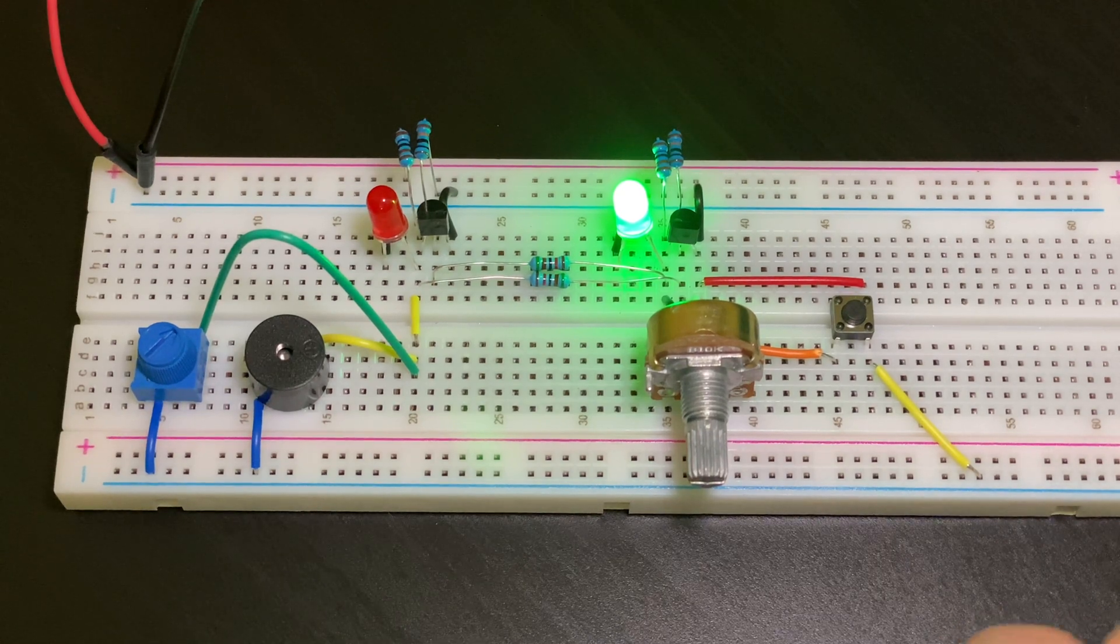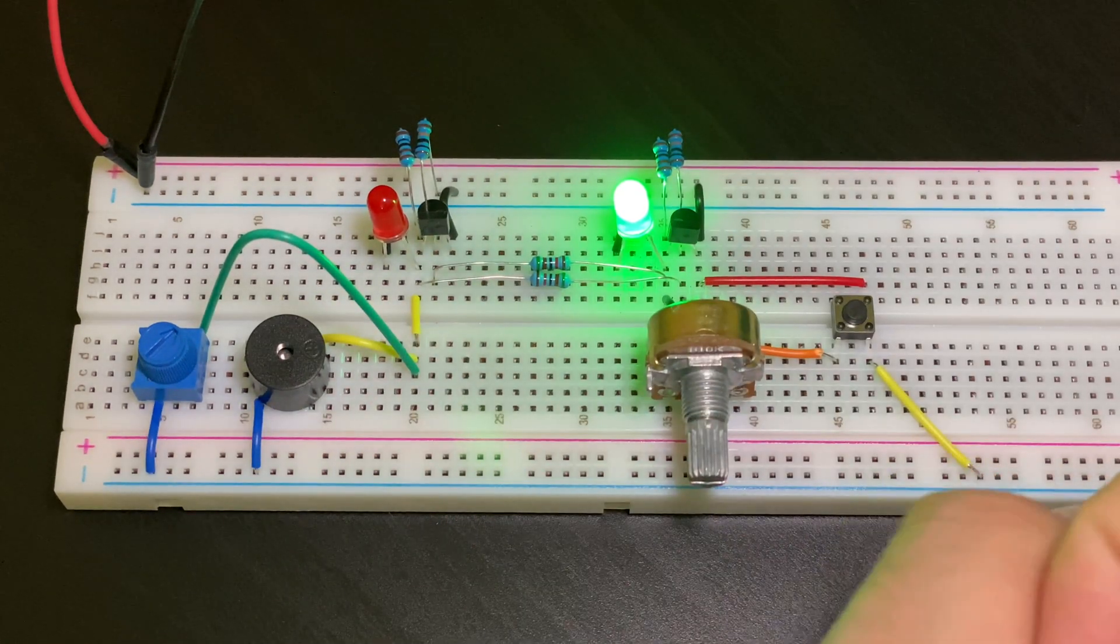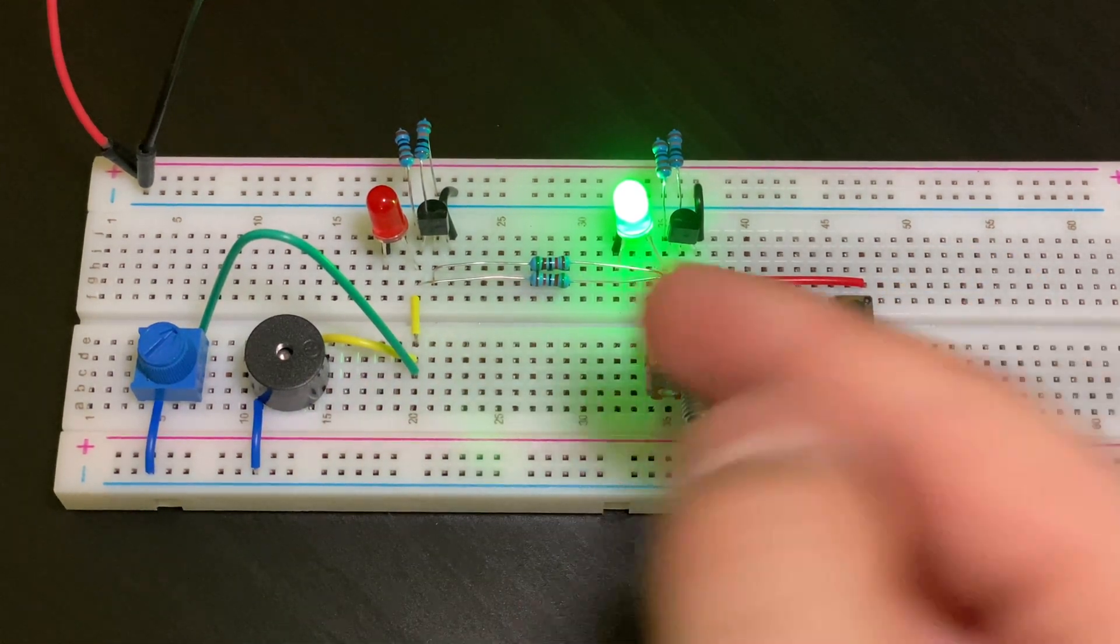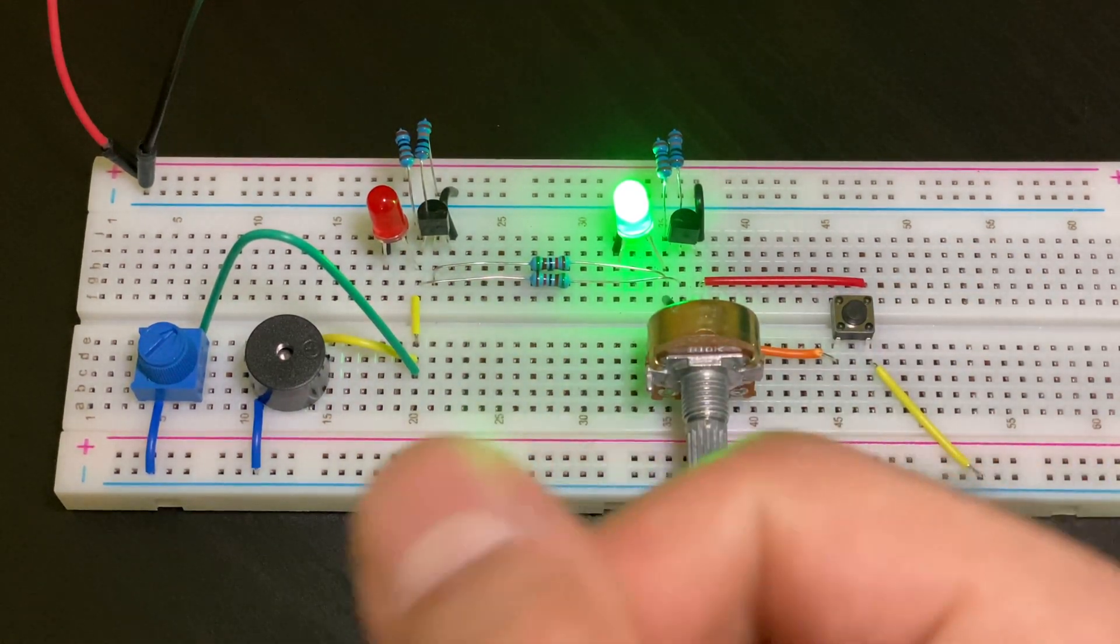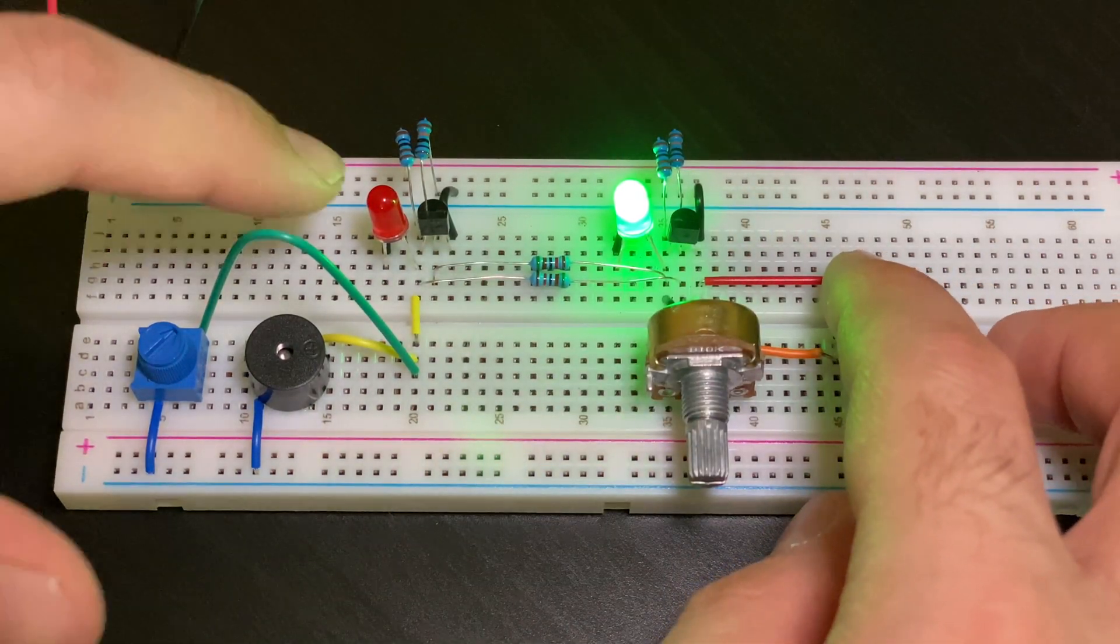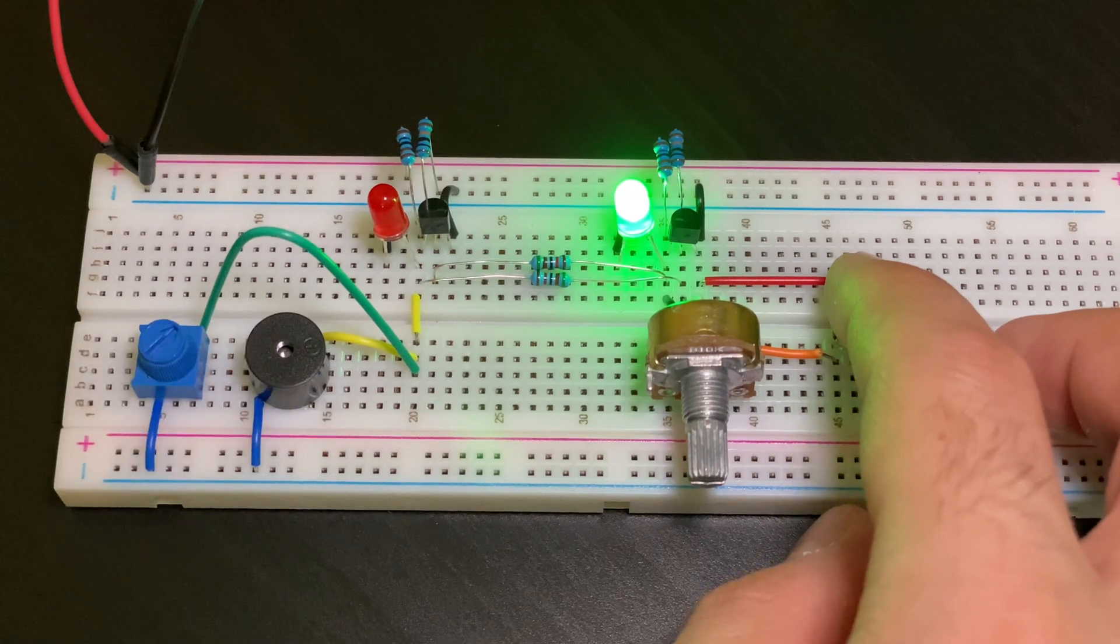My favorite part, the functionality. Here's the things that this circuit can do. You can currently see that the green LED is on max brightness. Now if I want to turn on the red LED very quickly and temporarily, I would need to press this button. And when the red LED turns on, that would trigger the buzzer.